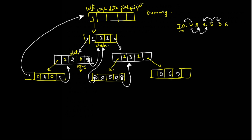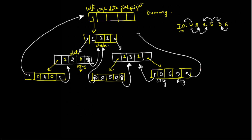For node 6, ltag=0 and rtag=0. The predecessor of 6 is 3, so its left pointer points to node 3. There is no successor for node 6, so its right pointer points to the dummy node. In the dummy node, its ltag is utilized and its rtag is also utilized because its right pointer points to itself. This completes the structure of a threaded binary tree.